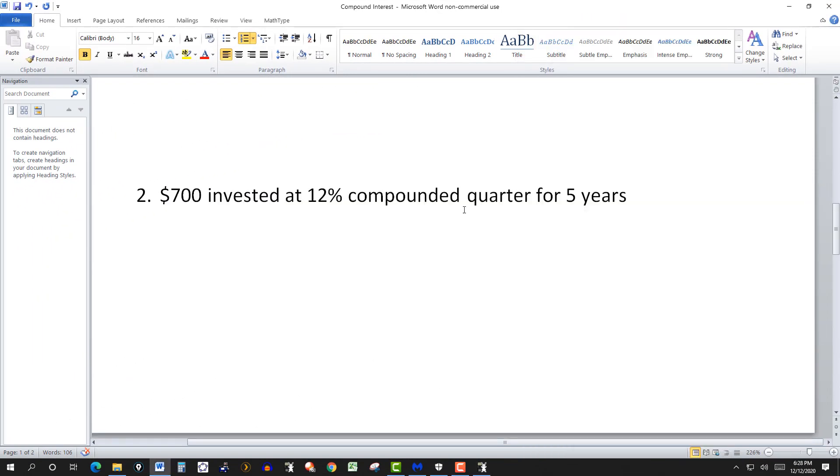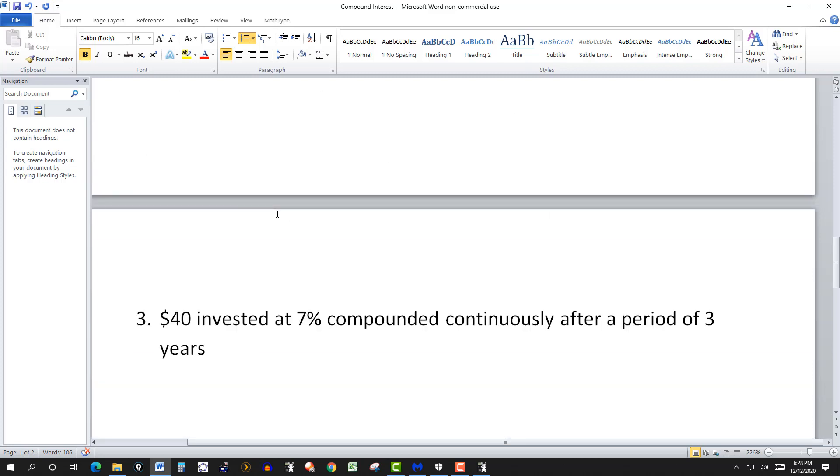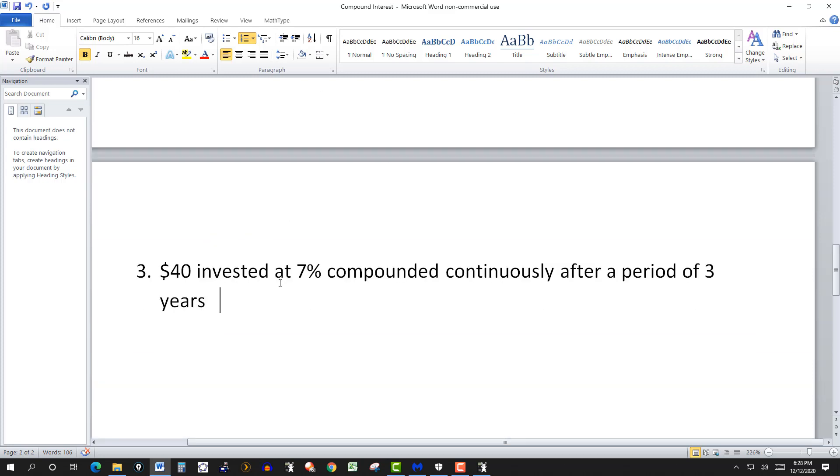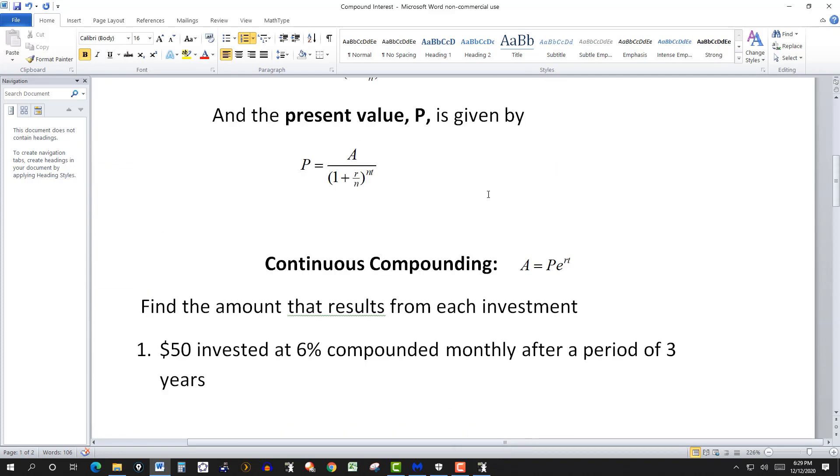For the last one, $40 invested at 7% compounded continuously after a period of three years. In this case, we have to use the formula for continuous compounding. A equals principal E to the RT.